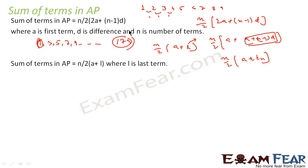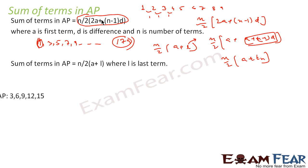The most crucial formula to remember is: sum of terms in AP is N/2 × (2A + (N−1)D). You can use the alternative formula when convenient, but please remember this main formula: sum of terms in AP is N/2 × (2A + (N−1)D).